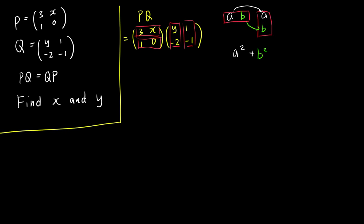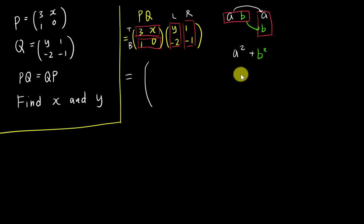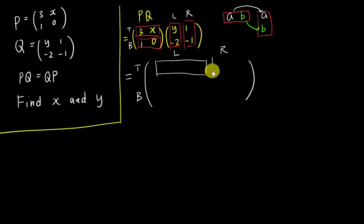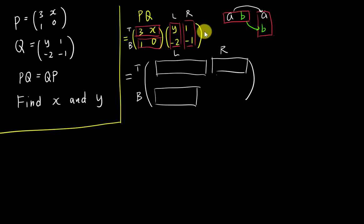If you see the pattern, I'm going to call the rows 'top' and 'bottom', and the columns 'left' and 'right'. After multiplication, if the top row multiplies the left column, you get the top-left entry. If the top row multiplies the right column, you get the top-right entry. If the bottom row multiplies the left column, you get the bottom-left entry. If the bottom row multiplies the right column, you get the bottom-right entry.